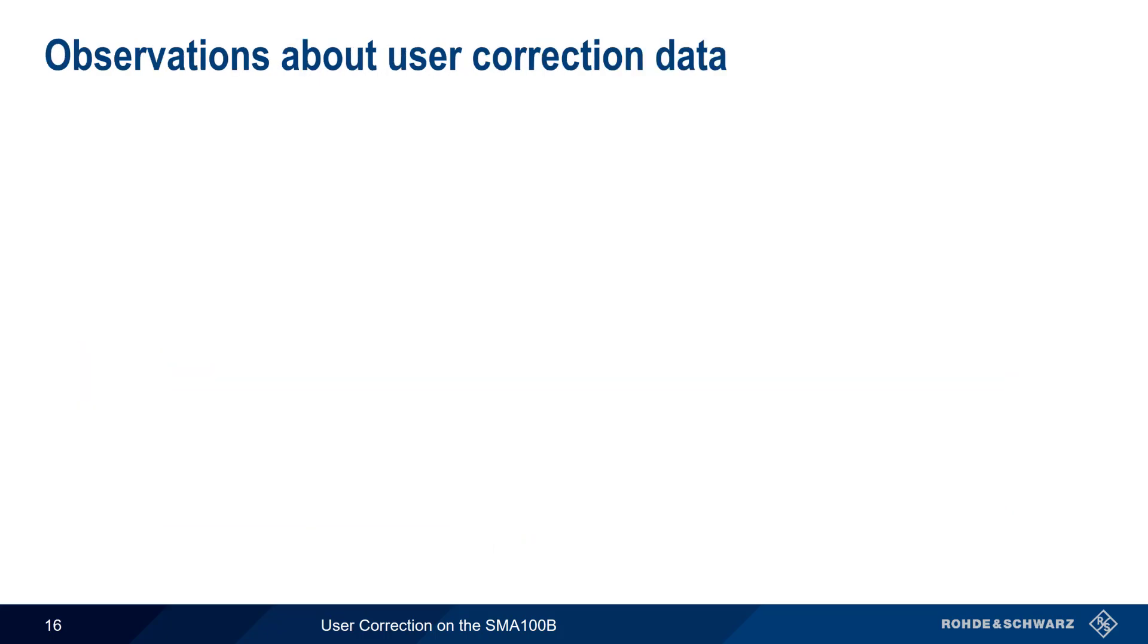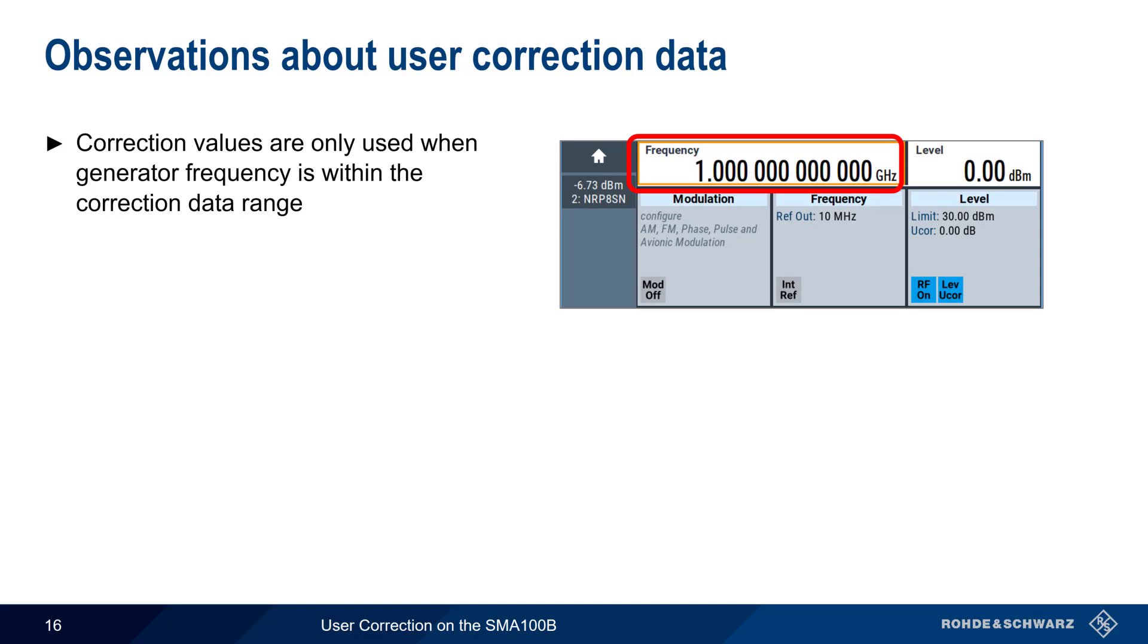Before we wrap up, a couple of quick observations about using correction data. First, remember that correction data is only used when the generator frequency is within the range of activated correction values. If our correction table covers 700 to 800 MHz, and our generator is operating at 1 GHz, no user correction is possible.